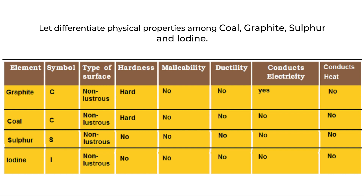The mother element here is carbon and the symbol C represents carbon. Which type of surface do these non-metals have? They all have a non-lustrous surface. There is no surprise in it because we have learnt that metals have lustre whereas non-metals are non-lustrous, because everything is exactly opposite between metals and non-metals.